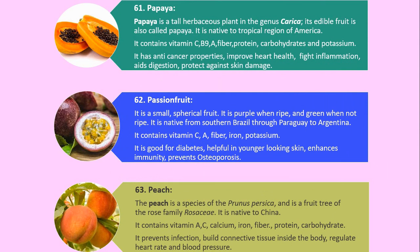Number 61. Papaya. Papaya is a tall herbaceous plant in the genus Carica. Its edible fruit is also called papaya. It is native to the tropical region of America. It contains vitamin C, B9, A, fiber, protein, carbohydrates and potassium. It has anti-cancer properties, improves heart health, fights inflammation, aids digestion, and protects against skin damage.